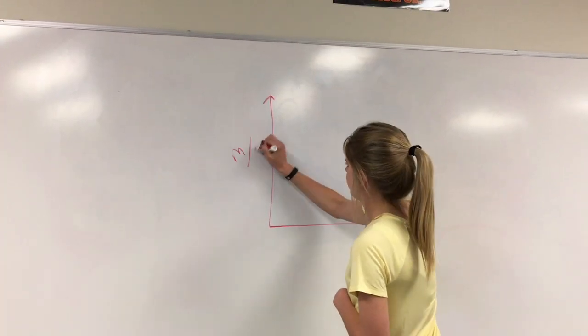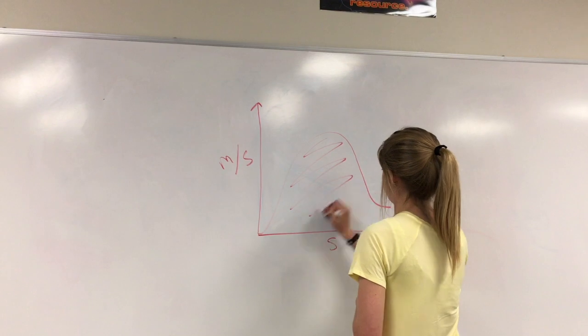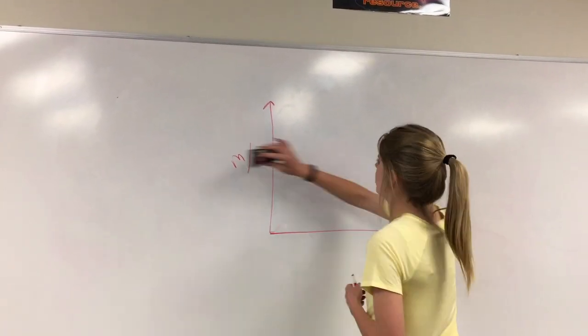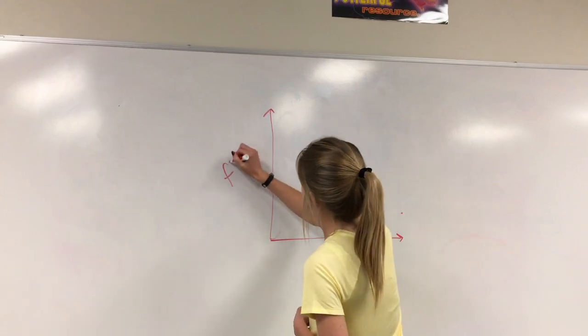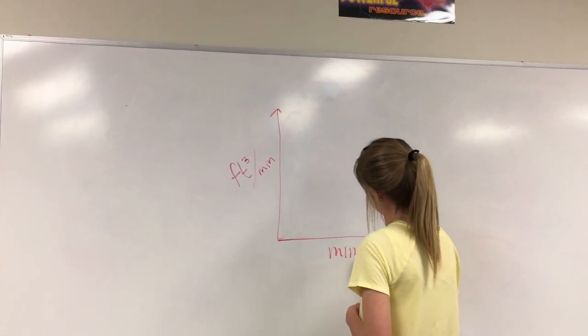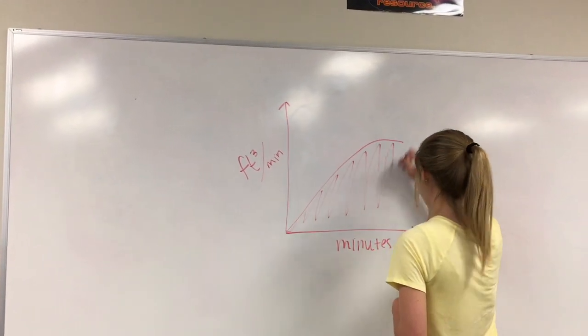It can be useful to find the area below a curve because, depending on what is being graphed, the area under a curve can generate a value not explicitly shown by the curve. For example, the area under a curve of a graph comparing speed and time can represent the total distance traveled, or the area under a curve of a graph comparing the rate of flow and time can represent the total volume of a certain substance.